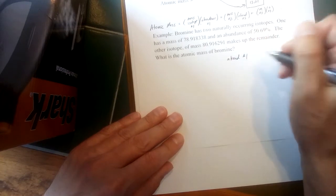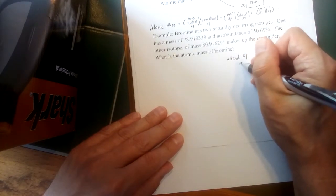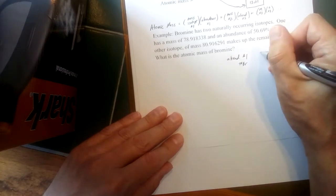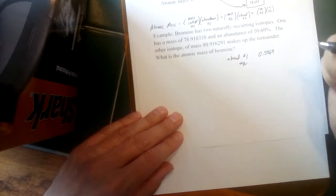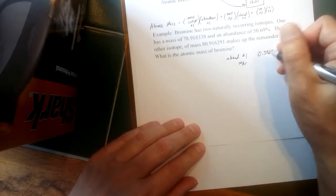So the abundance of the first isotope here, which would be bromine-79, is going to be 0.5069, so take out that hundred. I'll talk about when we get to the end—I'll talk about what might happen if you accidentally leave the hundred in there.